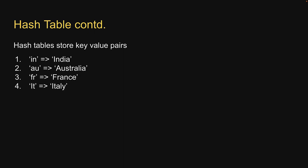I mentioned that hash tables store key value pairs. For example, IN is the key, India is the value, AU is the key, Australia is the value. We have a few more key value pairs as you can see. These need to be stored for fast lookup. If I specify the key as IN, I should get back India. Typically, we store the key value pairs in a fixed sized array.